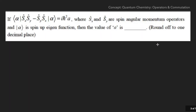Now let's take the main question. It says: α|SxSy − SySx|α = iℏ²a, where Sx and Sy are spin angular momentum operators and α (the ket vector) is the spin-up eigenfunction. Find the value of a. For beginners, this notation is called Dirac notation — I've made a video on it which you can access by clicking the 'i' button. It looks scary but is a very simple concept.